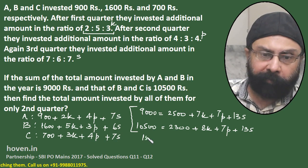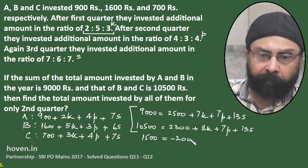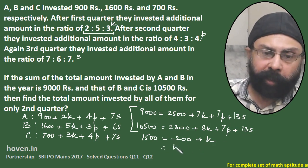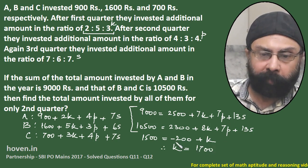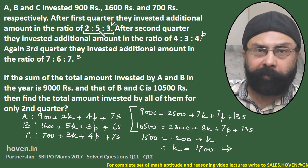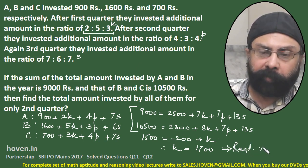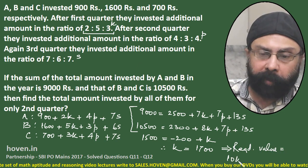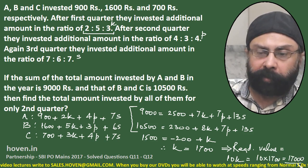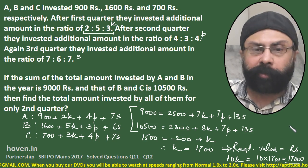Subtracting the upper equation from the lower: 10500 − 9000 = 1500, and on the right side: 2300 − 2500 = −200, plus k (the 7p and 13s terms cancel). So 1500 = −200 + k, therefore k = 1700. Which implies the required answer: 10k = 10 × 1700 = 17000.